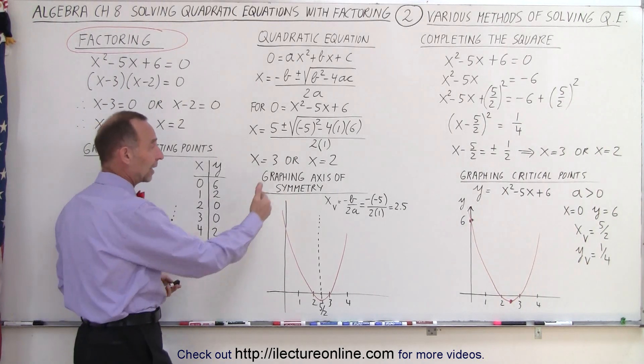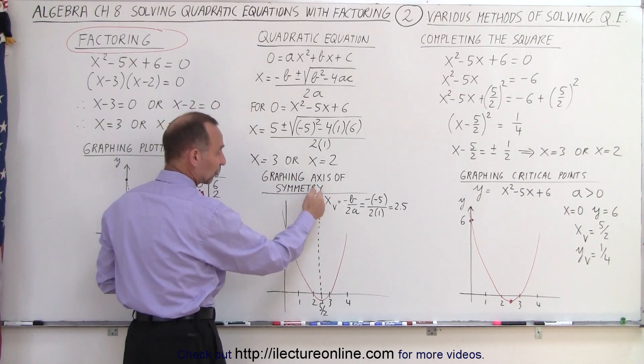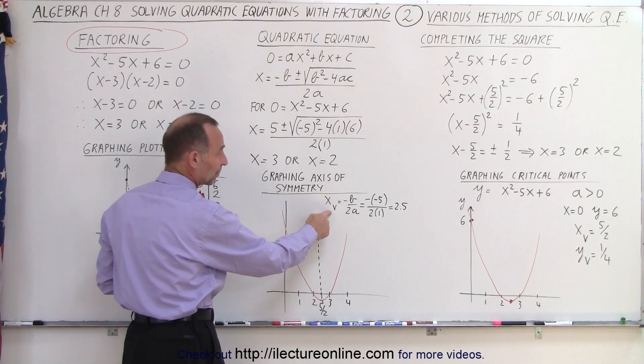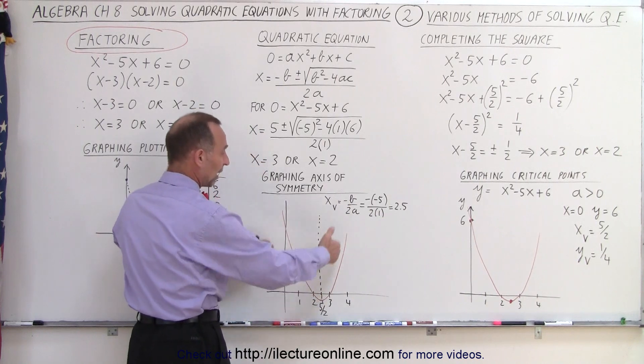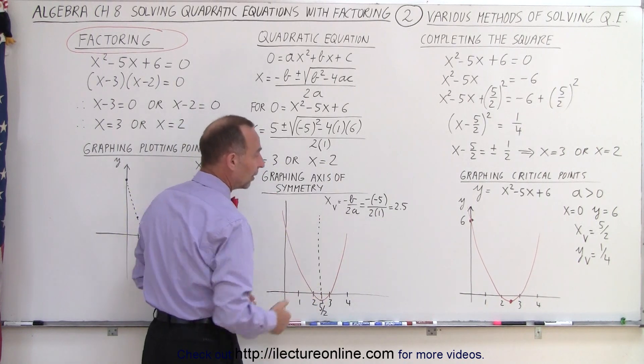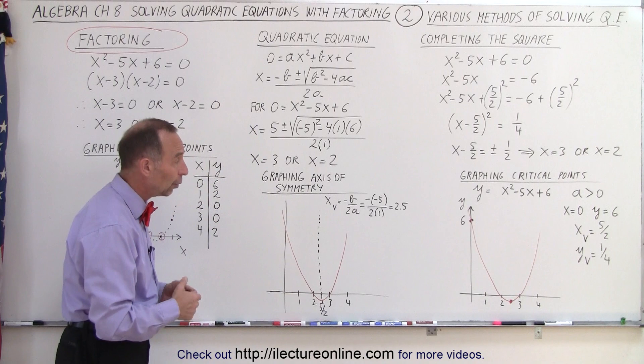Or we can use the axis of symmetry, where the x-coordinate can be found by finding -b over 2a, which in this case is 2.5. Then we know that the graph opens upward, so we can figure out how to graph things that way.